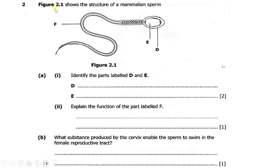Question two says: figure 2.1 shows the structure of a mammalian sperm. Part A, part 1: identify the parts labeled D and E. So D — I had initially looked at it as acrosome, but again it looks like it is a cell membrane. So D here is a cell membrane, this part here. Then E, this part here, is the nucleus.